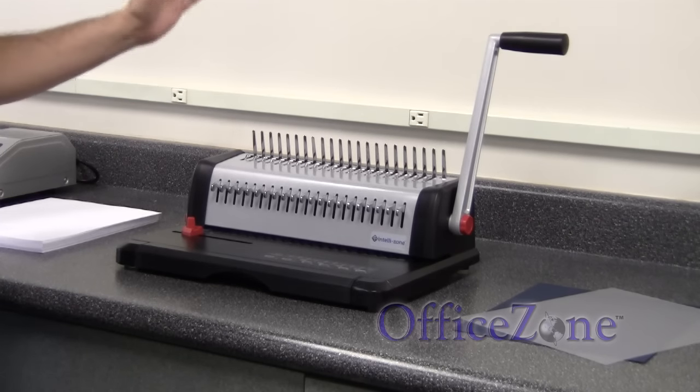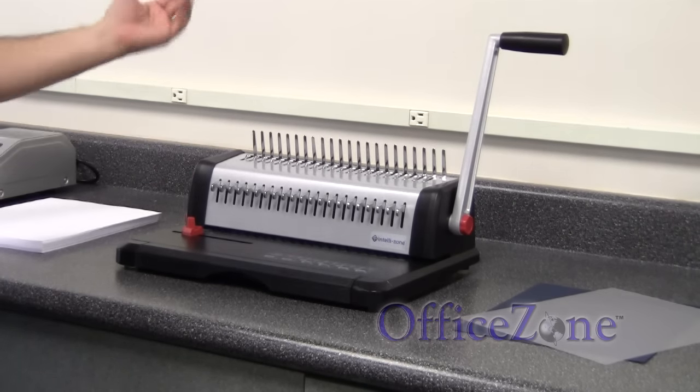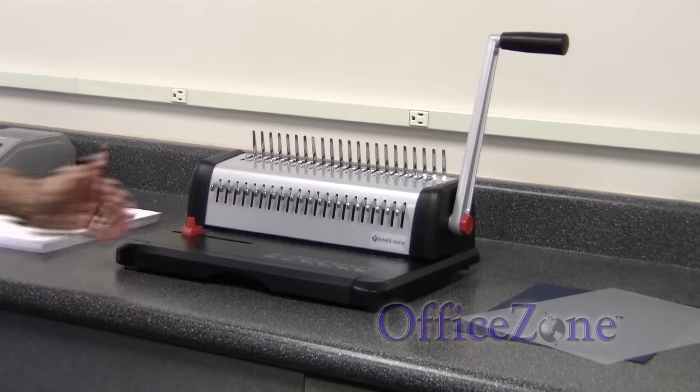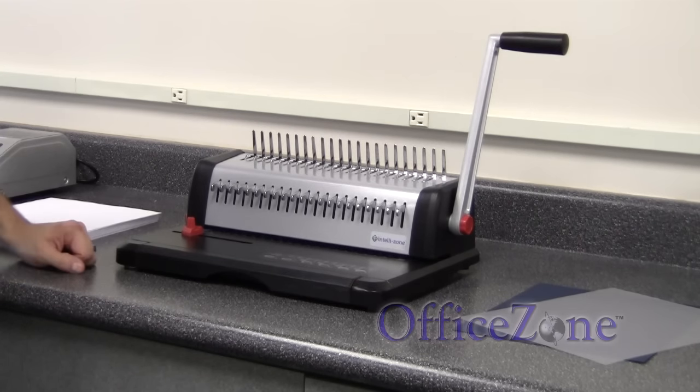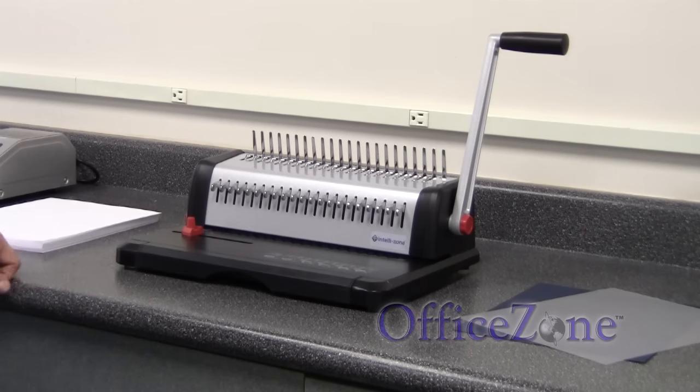Now in this case, I'm using an IntelliBind, but these instructions should be able to help you if you have a GBC machine, a Tamerica, Achilles, CircleBind, basically pretty much any comb binding machine out there.